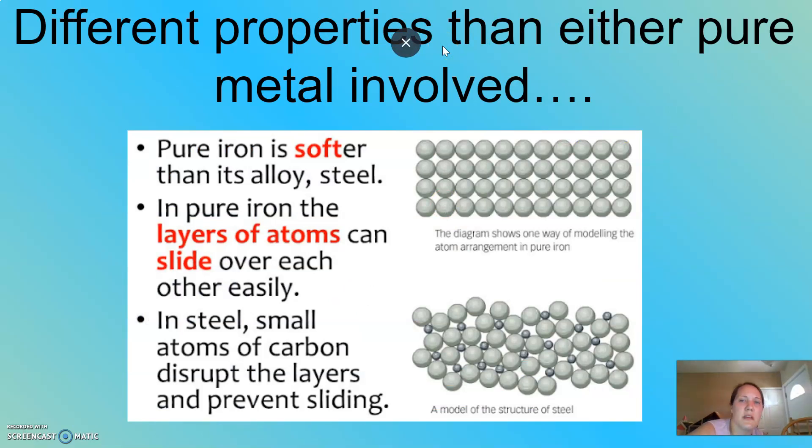And most alloys have different properties than either pure metal involved. And so that's a little bit weird because when we think about mixtures, we often think about things retaining their properties, which individually the atoms retain their properties. But once we put them together, the overall substance has different properties in either metal.